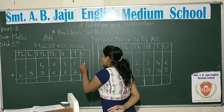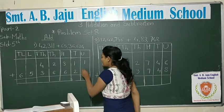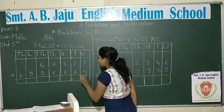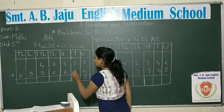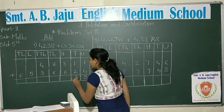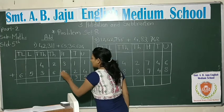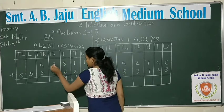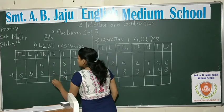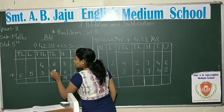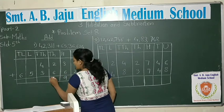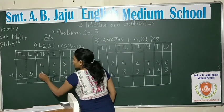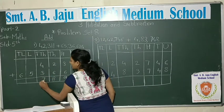So let's start. 1 plus 4 is 5. 1 plus 2 is 3. 3 plus 6 is 9. 2 plus 6 is 8. 4 plus 3 is 7. We look at how many digits we have — 5 digits here, 6 digits there.